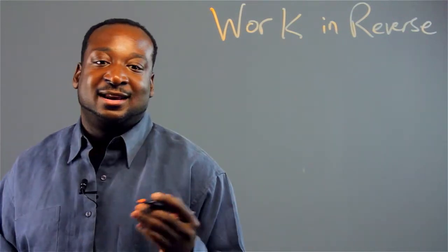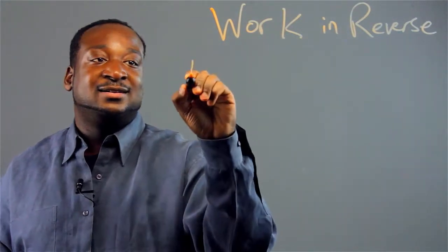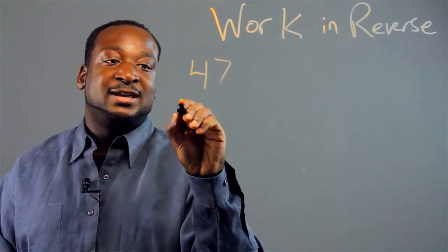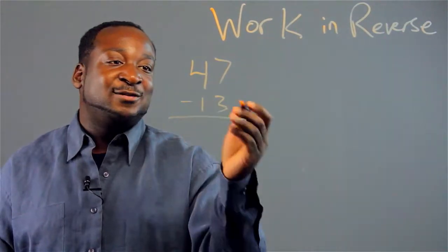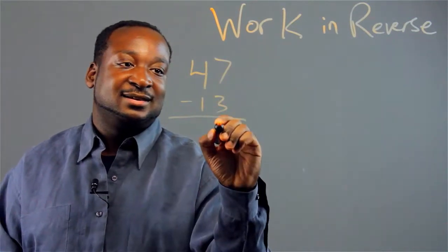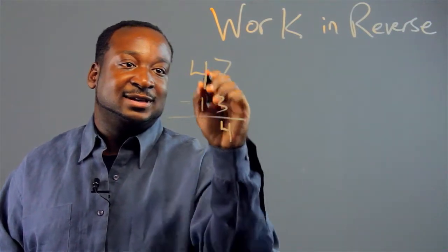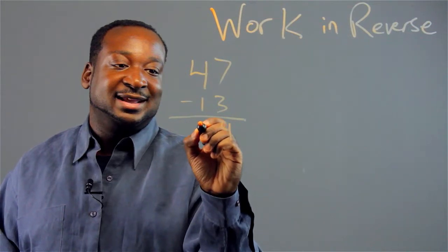Basically what that means is, let's say on the test I'm given 47 minus 13. After I'm done doing my calculations, I get 4 here and 3.